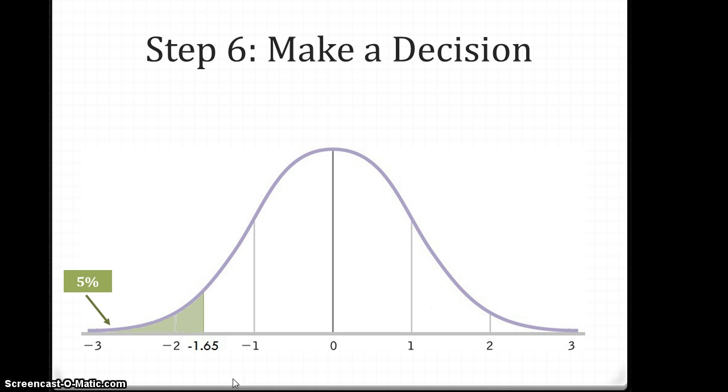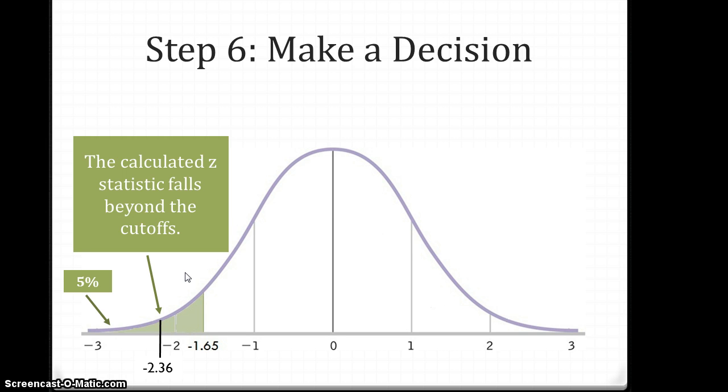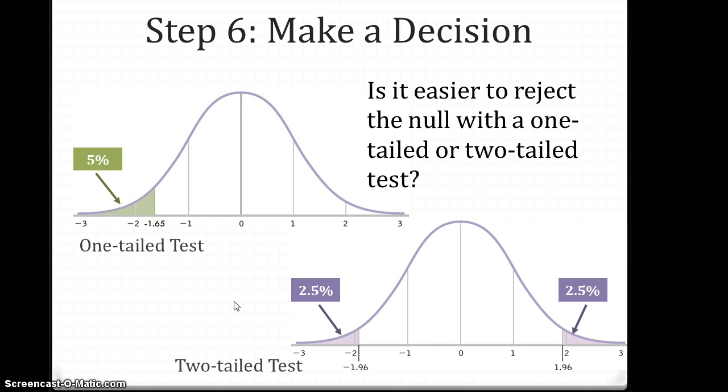We have our distribution. Here I've marked off our critical value and shaded in the tail that encompasses that 5% of the score. I've put in our Z-score that we computed in the previous example, which is negative 2.36. That calculated Z falls beyond the cutoff for the single cutoff for this hypothesis test. We still end up making the same decision, which is rejecting the null hypothesis.